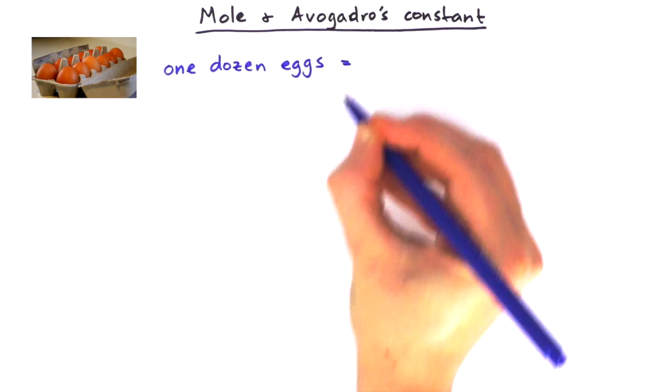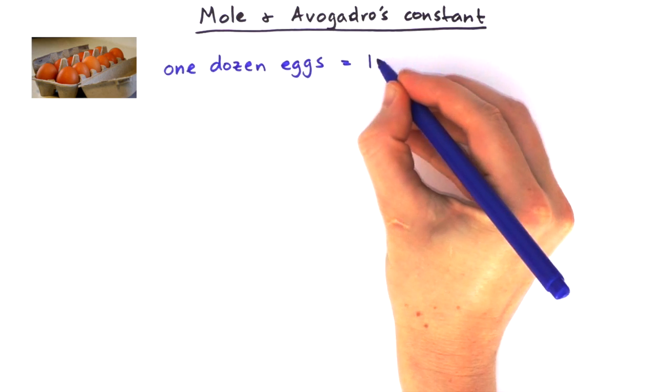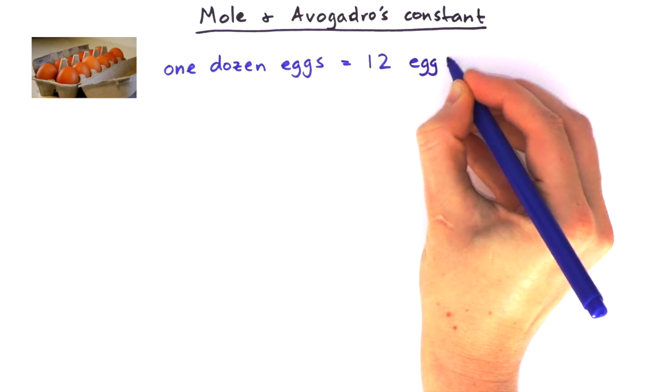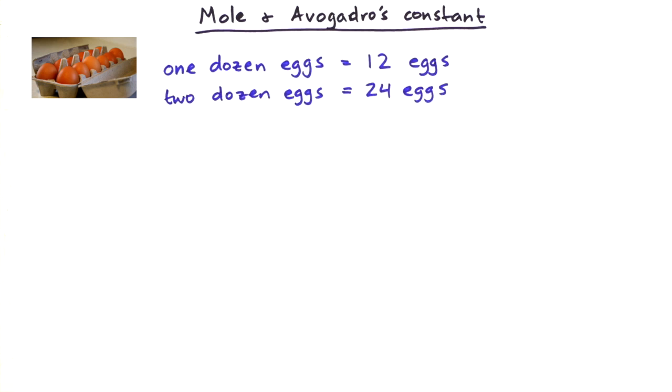When we say one dozen eggs, that means there's 12 eggs, and we can use it with other numbers like two dozen eggs, which would be 24 eggs.